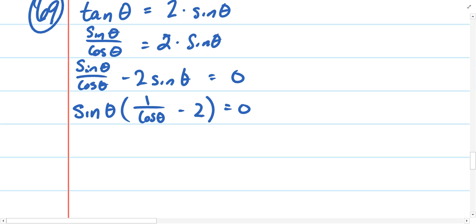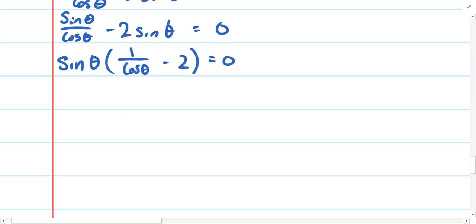And now I really think we're going in the right direction here because essentially what I have are two factors. Sine theta times, and I'm going to rewrite this as secant theta minus 2 equals 0. And now whether sine theta or whether secant theta minus 2 is equal to 0, both of those will produce a solution or multiple solutions for this particular problem.